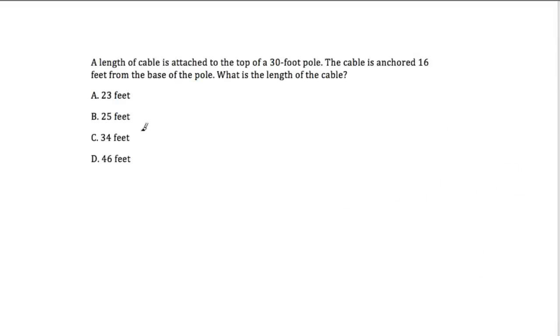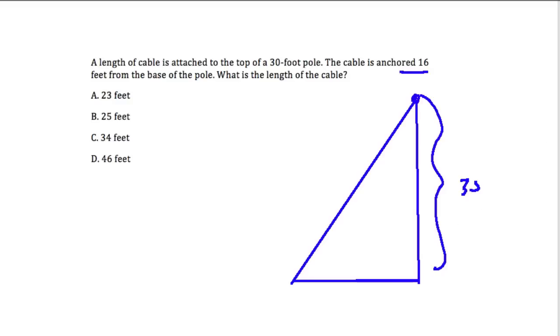And we have one more example of this type. Now we have a length of cable attached to the top of a 30-foot pole. So now we know the pole again is 30 feet. But this time the cable is anchored right to the top of it, attached to the top of it and anchored 16 feet from the base of the pole. So what is the length of the cable? This distance right here is how far the cable is anchored from the pole, and that's 16 feet. The height is 30 feet.